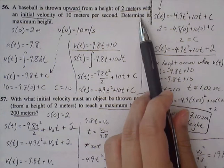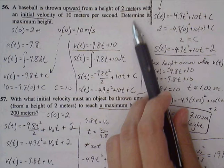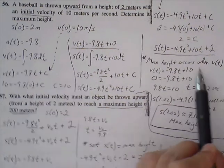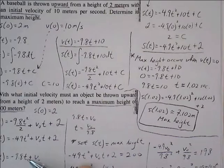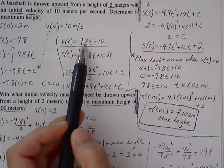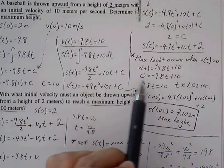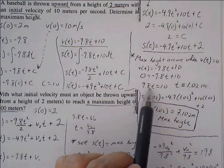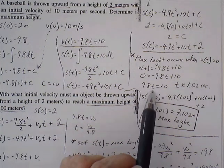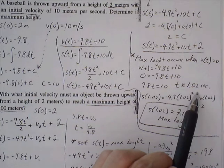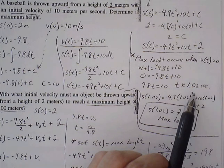Now we want to find the maximum height. Maximum height will occur when velocity equals 0. We're going to take our velocity function, set equal to 0, and then solve for t. When we solve for t, we get 9.8t equals 10. Divide both sides by 9.8. t is roughly equal to 1.02 seconds.